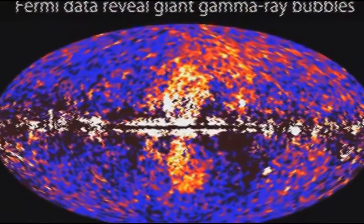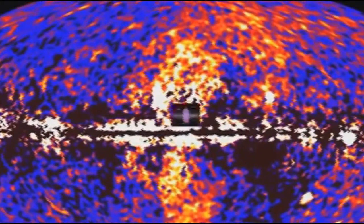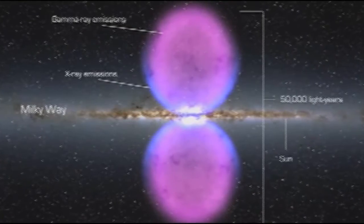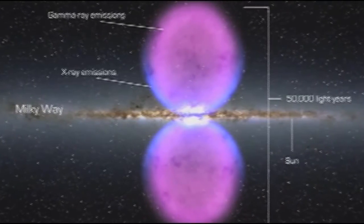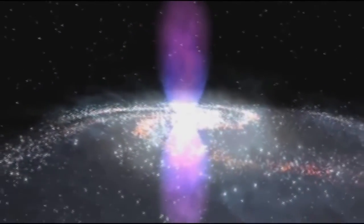NASA's Fermi Gamma Ray Space Telescope has unveiled an unknown structure centered in the Milky Way. The feature spans 50,000 light years and may be the remnant of an eruption from a supersized black hole at the center of our galaxy. The object looks like a pair of bubbles extending above and below our galaxy center. Each lobe is 25,000 light years tall, and the whole structure may only be a few million years old.